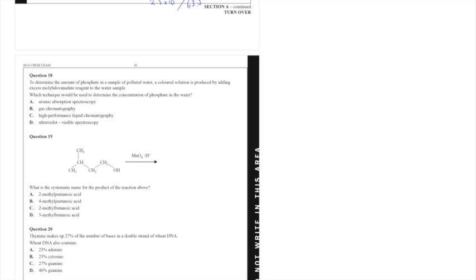Question 18. What techniques would be used to determine the concentration of phosphate in water? I usually read that last line of the question first then the text. So we're looking for the concentration of phosphate in water. To determine the amount of phosphate in a sample of polluted water, a colored solution is produced by adding excess molybdate reagent to the water sample.